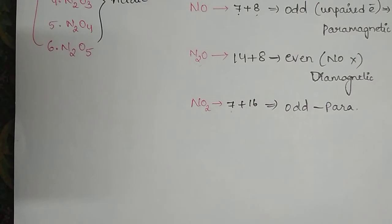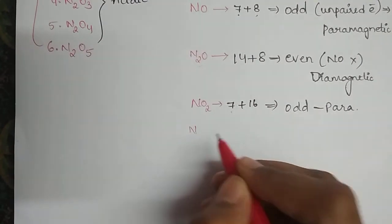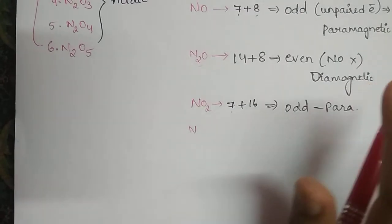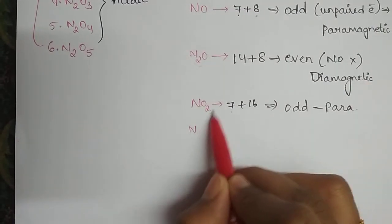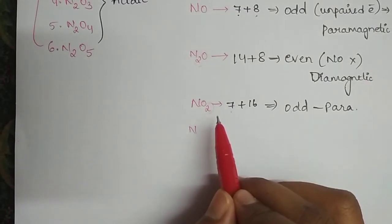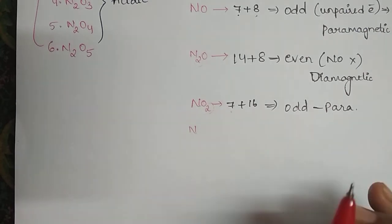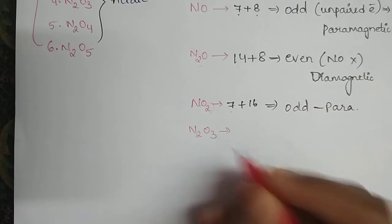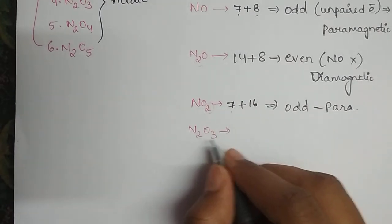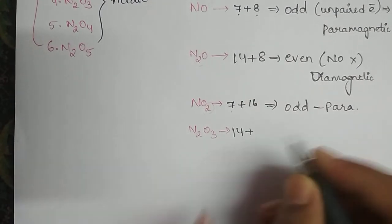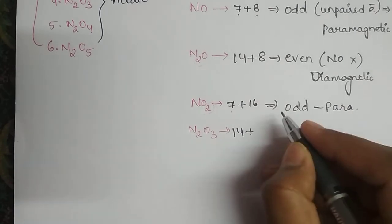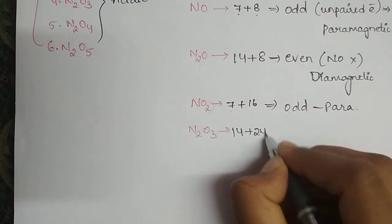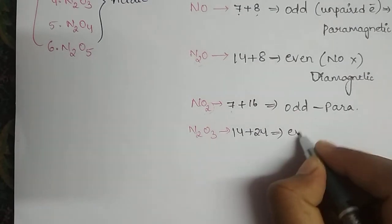Next, N2O3: two nitrogens give 14, plus three oxygens give 3×8 = 24. So 14+24 = 38. Even plus even gives even, meaning there are no unpaired electrons, so N2O3 is diamagnetic in nature.